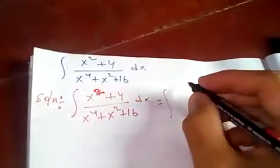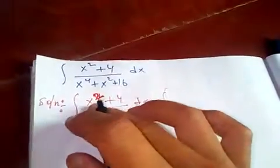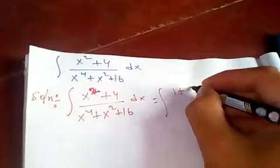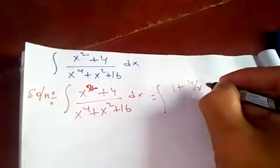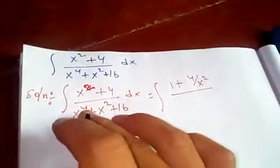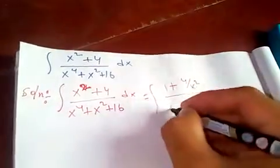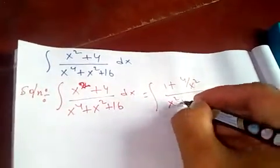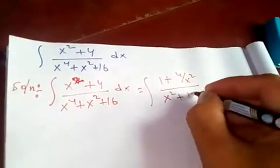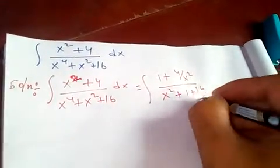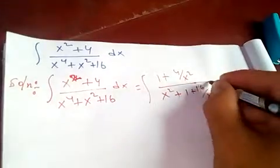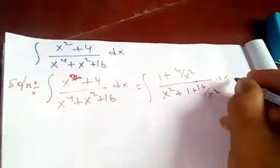After dividing by x²: x² divided by x² is 1, and 4 divided by x² gives 4/x². In the denominator, x⁴ divided by x² gives x², then minus 1, and 16/x².